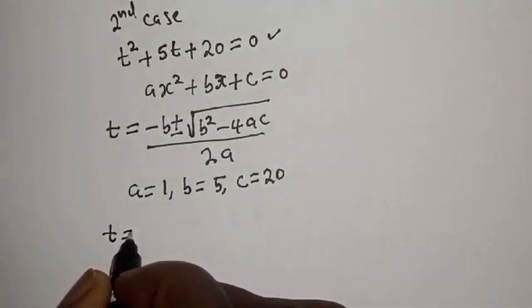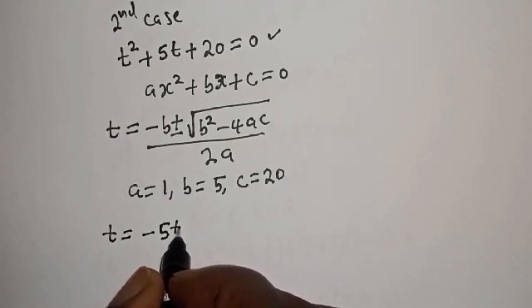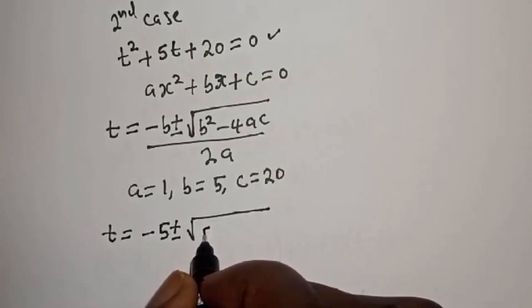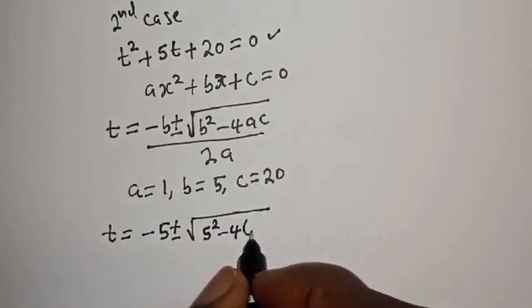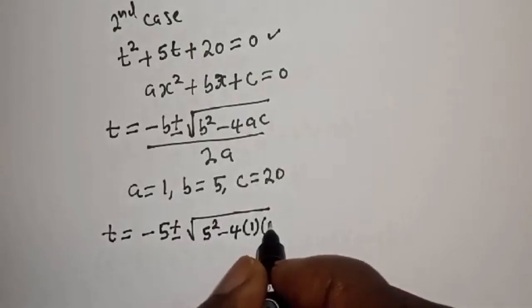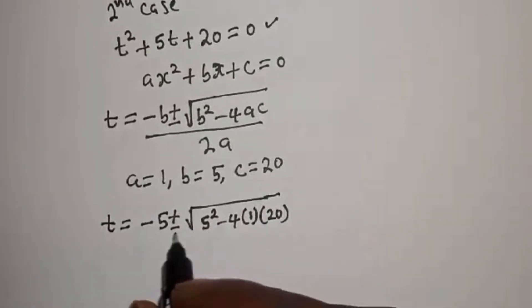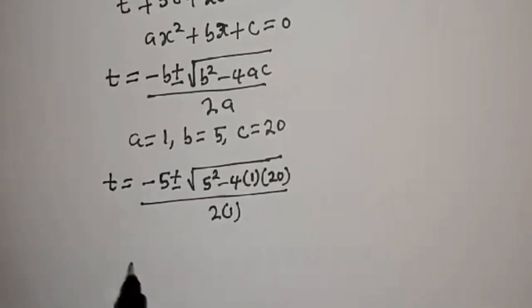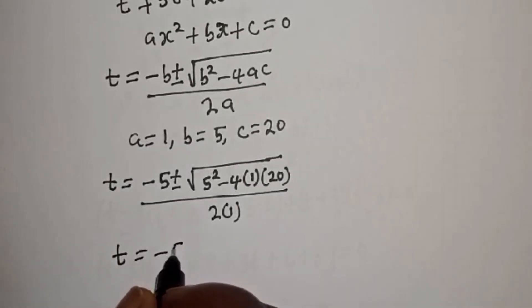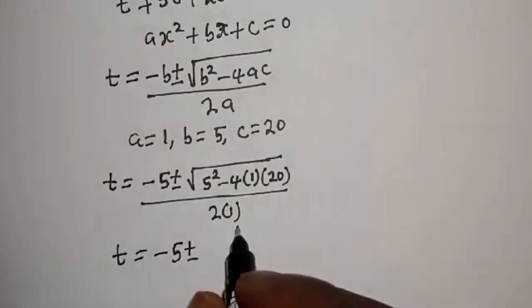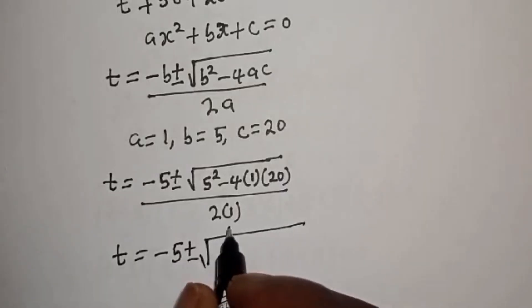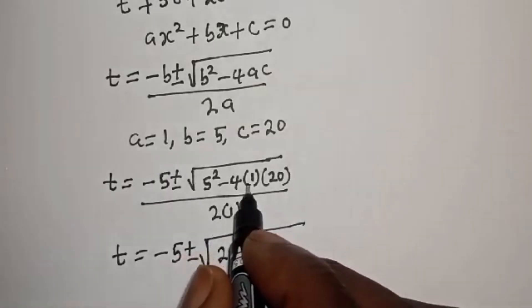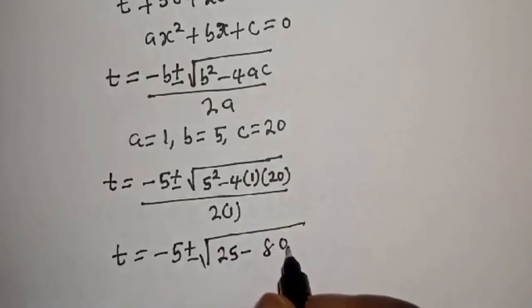Substituting: t equals minus 5, plus or minus square root of 5 squared minus 4 times 1 times 20. That gives t equals minus 5, plus or minus square root of 25 minus 80, which is square root of minus 55.